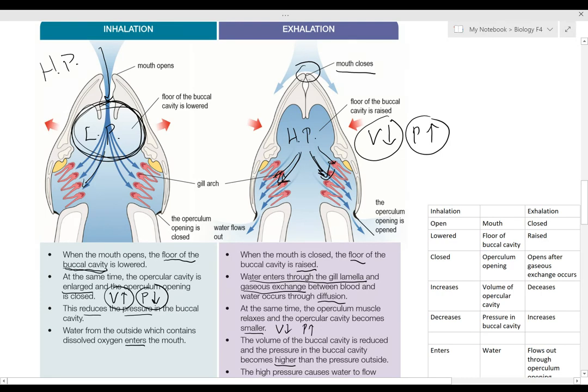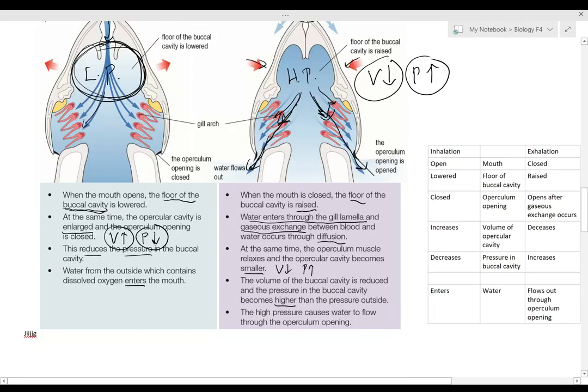The water enters through the gill lamella and gaseous exchange happens between the blood and the water through diffusion. At the same time, the opercular muscles relax and the opercular cavity becomes smaller. So you see this one moves in. This increases the pressure here. The water is now pushed out behind here. The pressure becomes higher because the space becomes smaller, and this high pressure causes the water to flow through the operculum opening and out.